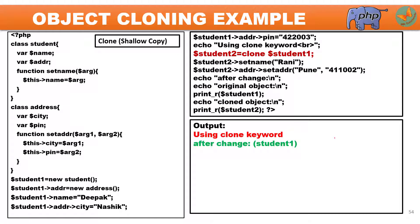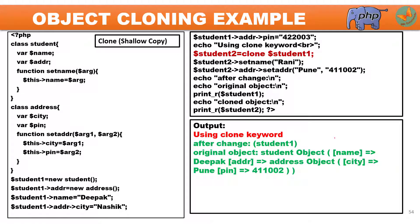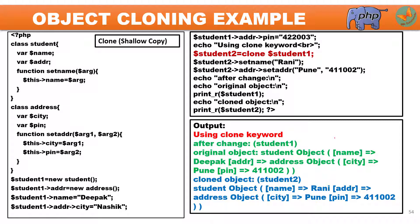In the output with the clone keyword, $student1's name 'Deepak' is correctly preserved — the name is properly cloned. However, looking at the address, student1's city and pin number are now showing 'Pune' and Pune's pin number, which is undesirable. The cloned object $student2 correctly shows 'Rani', 'Pune', and its pin number. But Deepak's city and pin number are the same as Rani's. This is the shallow copy problem — member variables are properly cloned but contained objects are not.